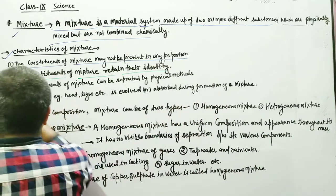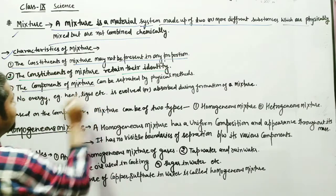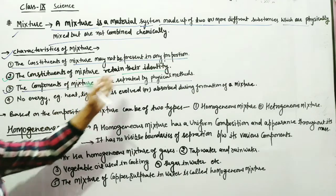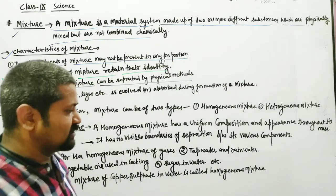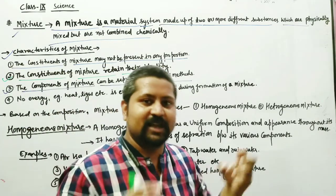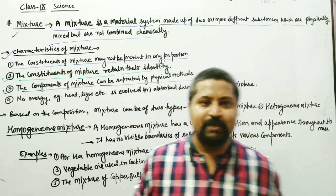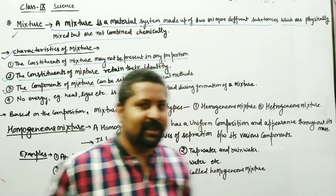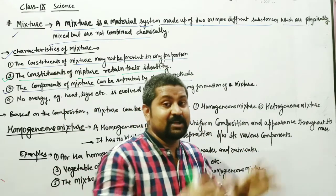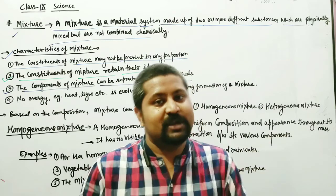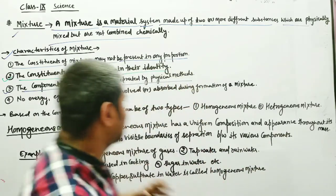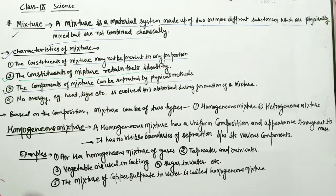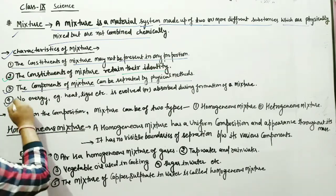Third characteristic: the components of a mixture can be separated by physical methods. Since we are mixing substances physically, we can also separate them out by physical methods. We will study further in this chapter the different methods used to separate mixtures and what those methods are called.